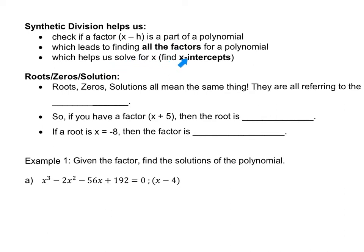Let's go over roots, zeros, and solutions again. Anytime you hear roots, zeros, or solutions, they mean all the same thing — they're talking about finding where the curve crosses the x-axis. If you have a graph with some sort of curve, when you're finding roots, zeros, and solutions, you're finding where it crosses the x-axis at those specific points. Sometimes you won't be able to see them because some are imaginary numbers, and that's why the algebra will reveal all the x-intercepts, even imaginary ones.